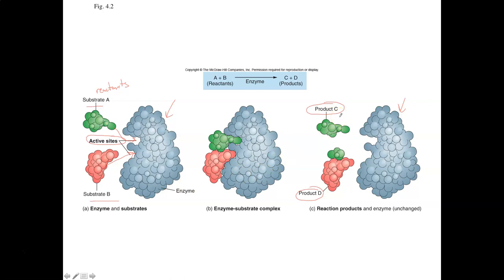Enzymes speed up the reaction and lower the activation energy, but they don't change what the reaction is going to do. In this scenario, A plus B becomes C plus D. That reaction is going to be the same whether the enzyme is there or not. The enzyme simply makes this reaction faster by lowering that activation energy.